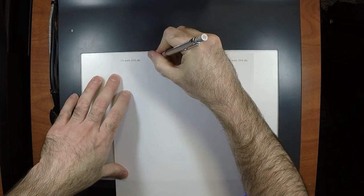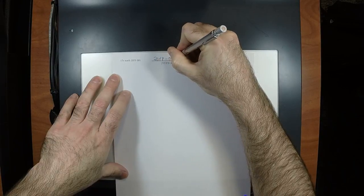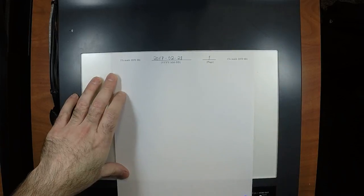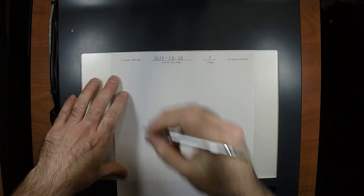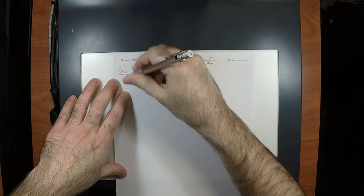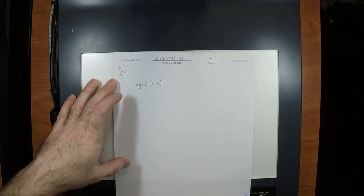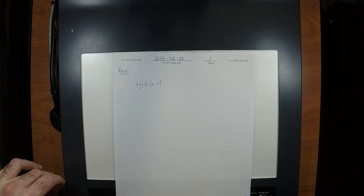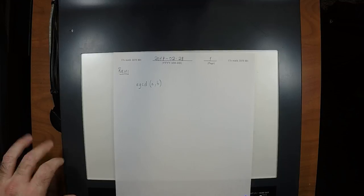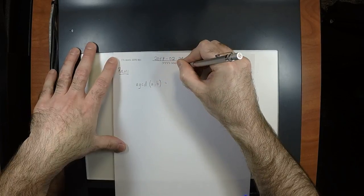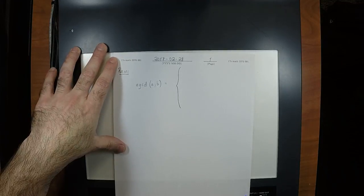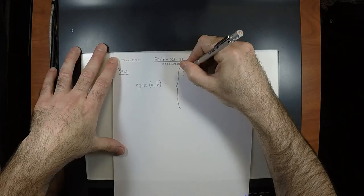So, any questions about the GCD exercise? Just to remind us, the extended GCD of inputs A and B, supposing that A and B are legitimate inputs — meaning both integers, both non-negative and at least one of them positive — there are two base cases. One of the base cases is that the GCD is A when what?